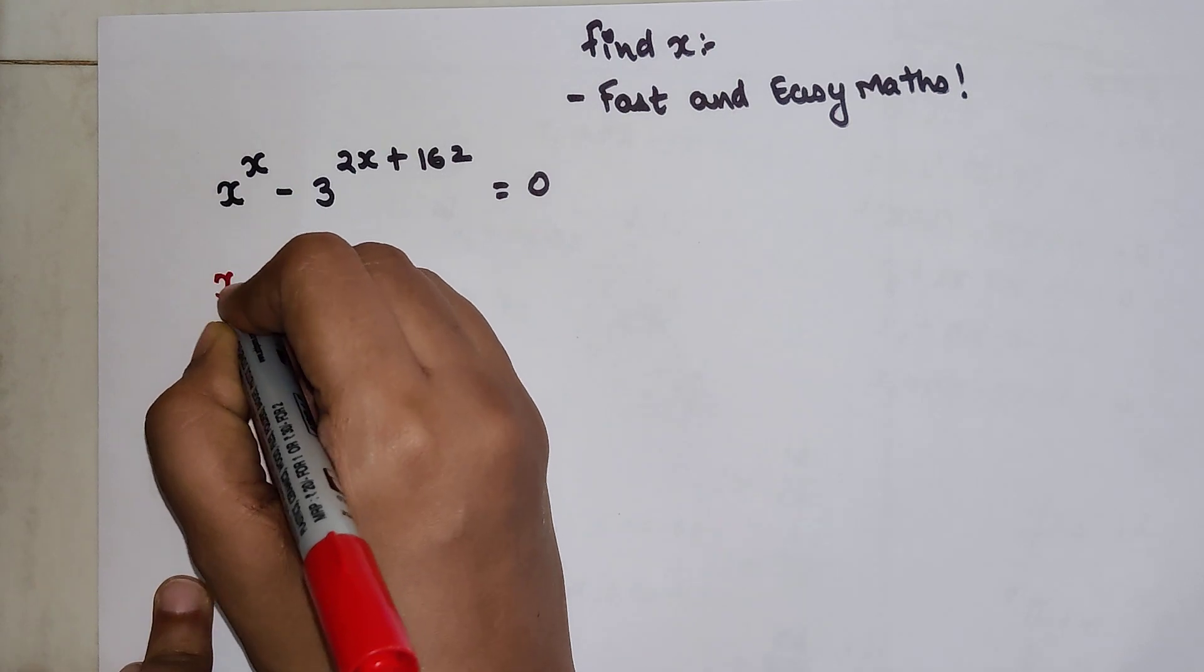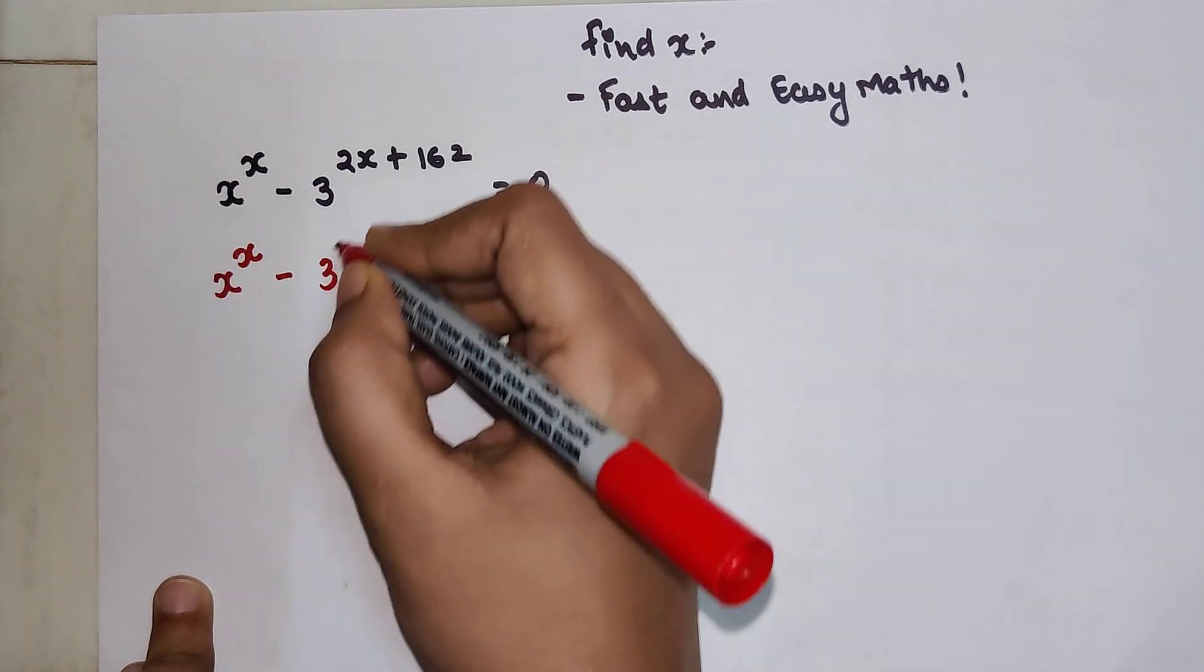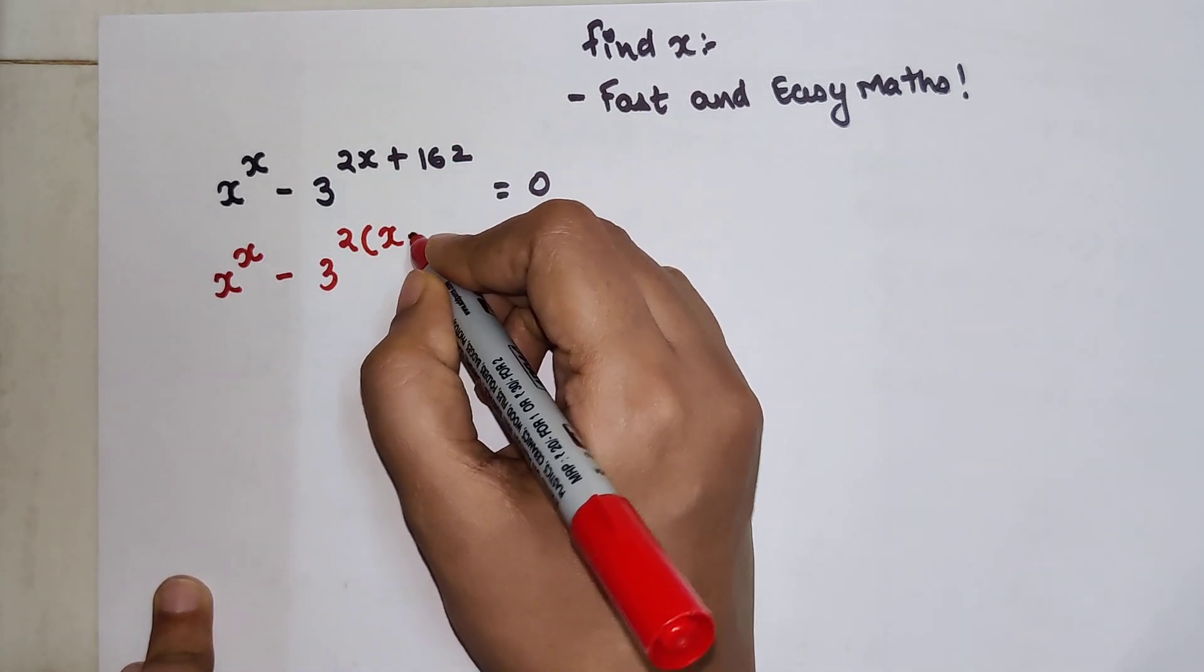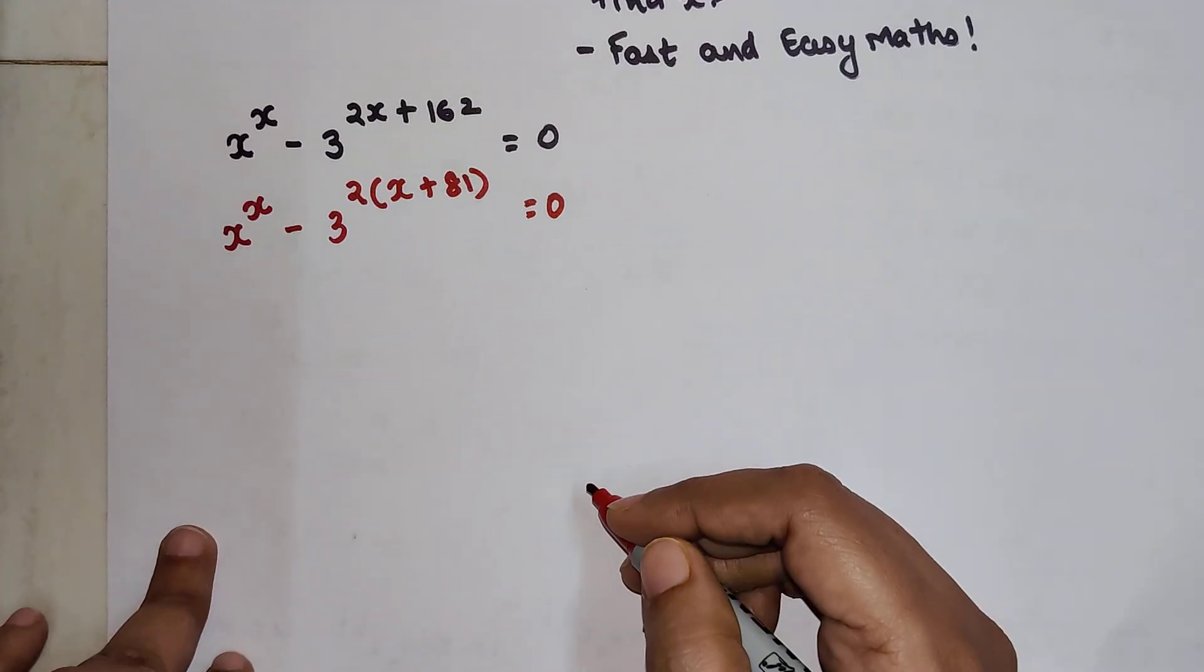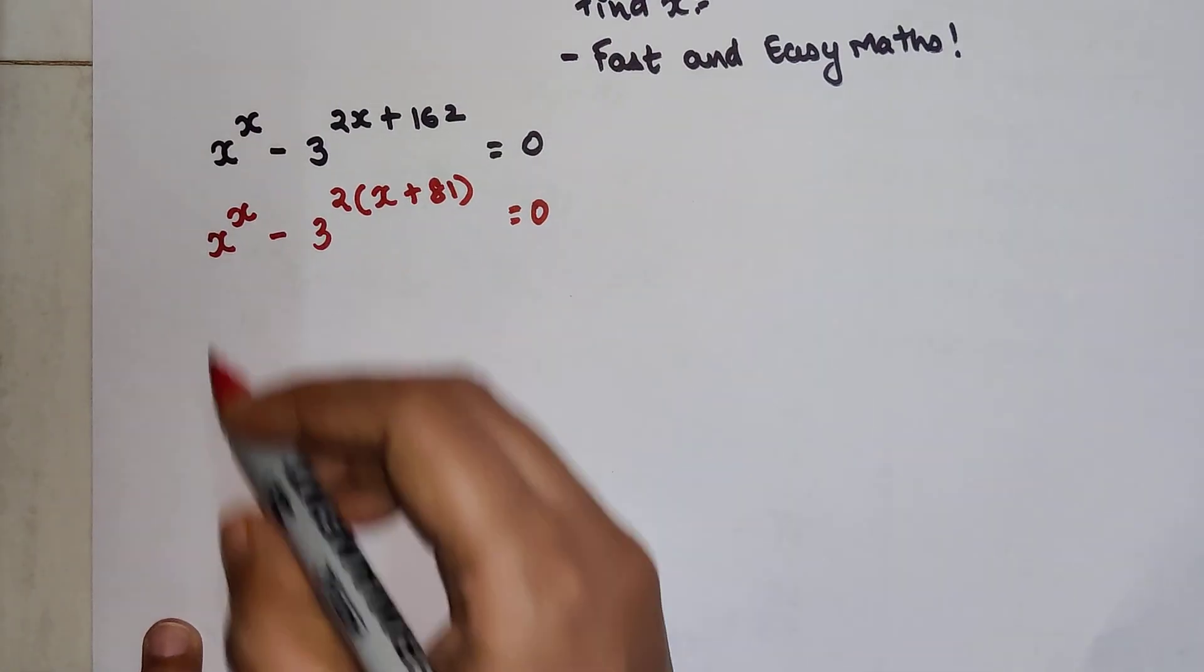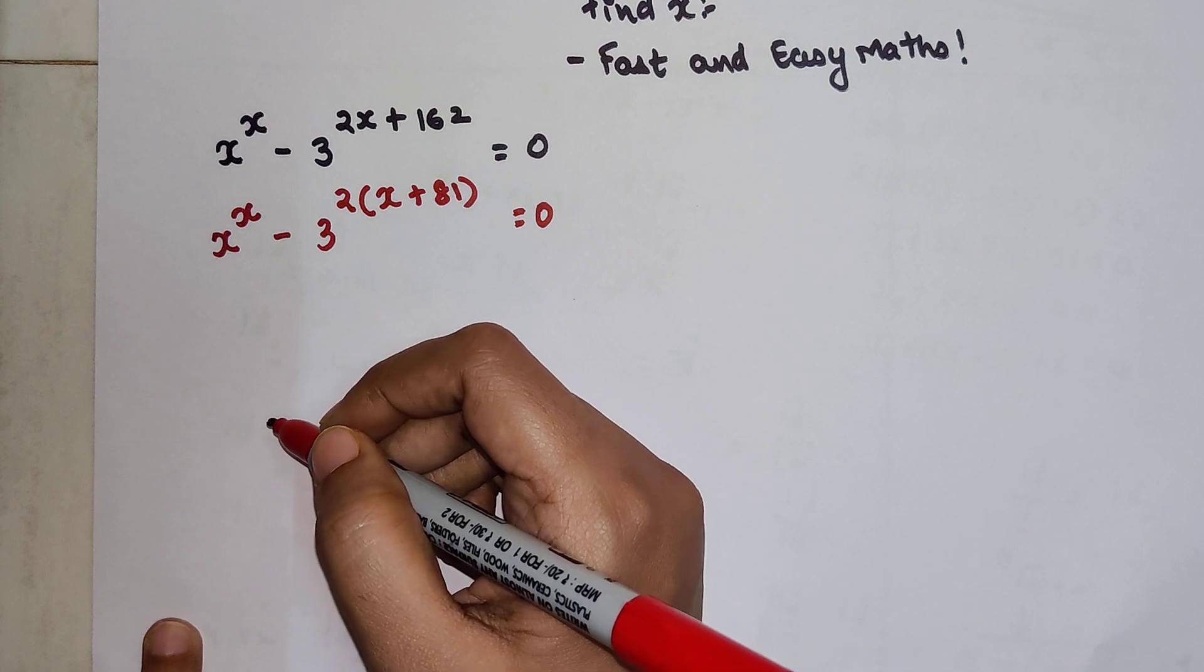So I will write the first number x raised to x as it is, and this will be written as 3 raised to 2 is common, and I have x plus 81 equals 0. Now again, after this step also, I don't understand how to do this further, so I will simply do what? I know 3 raised to 2 is nothing but 9.